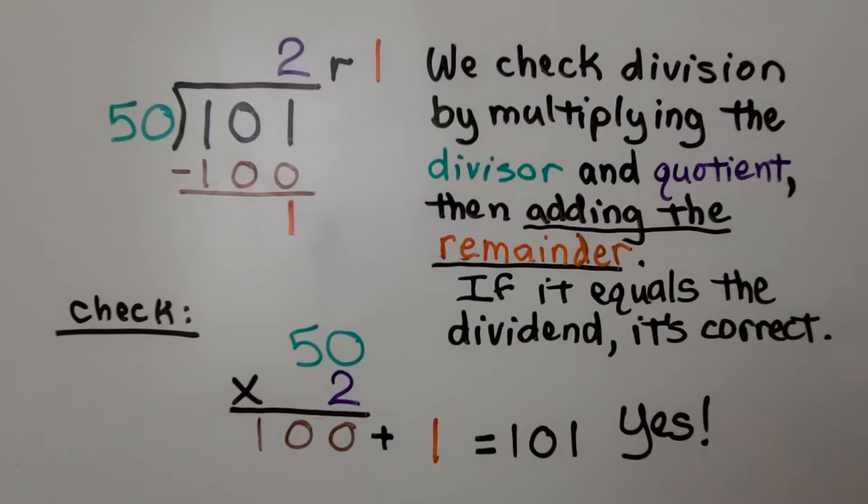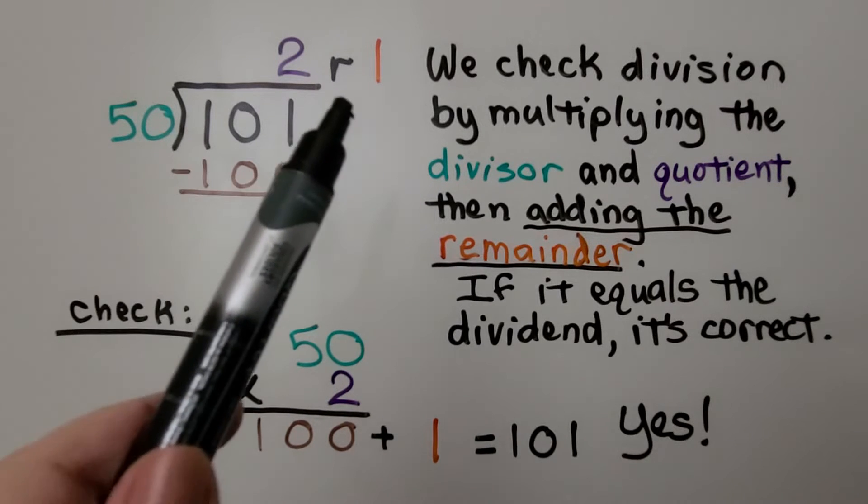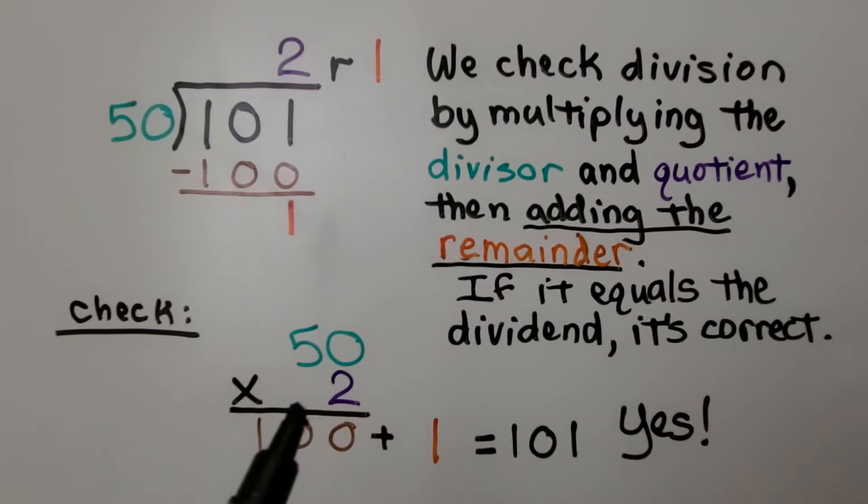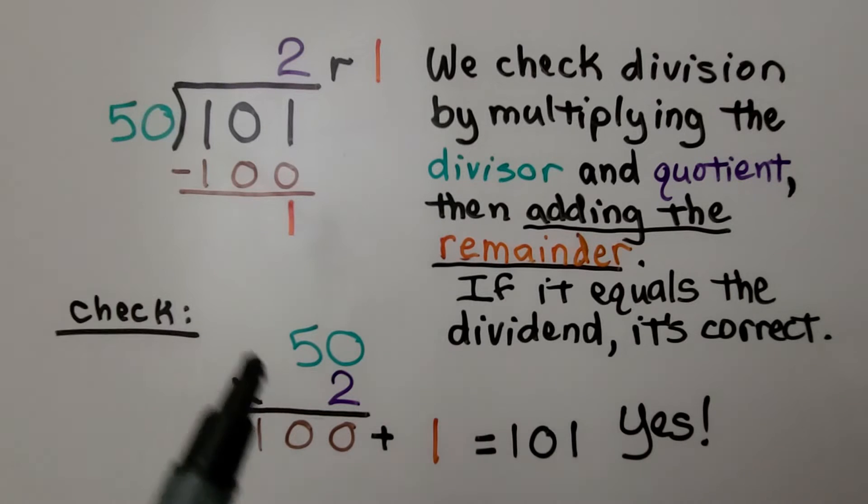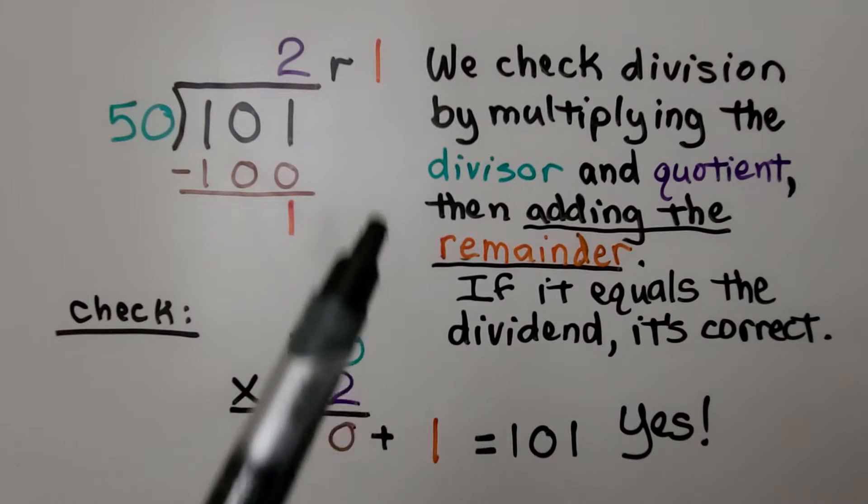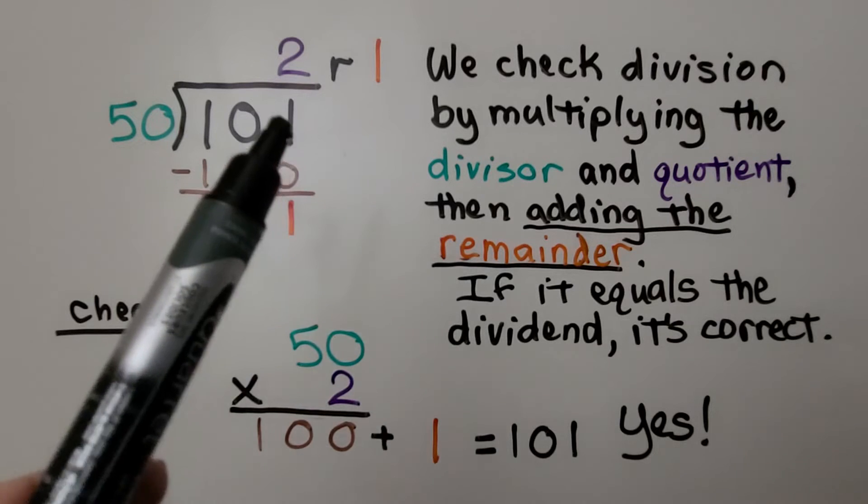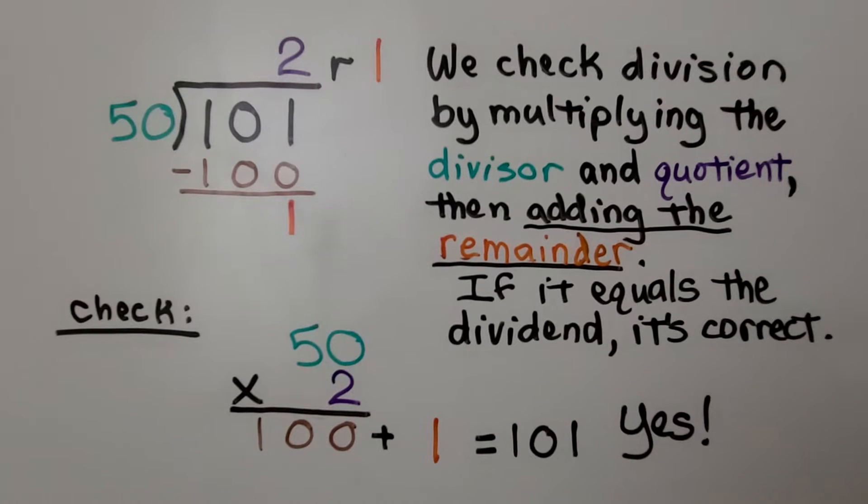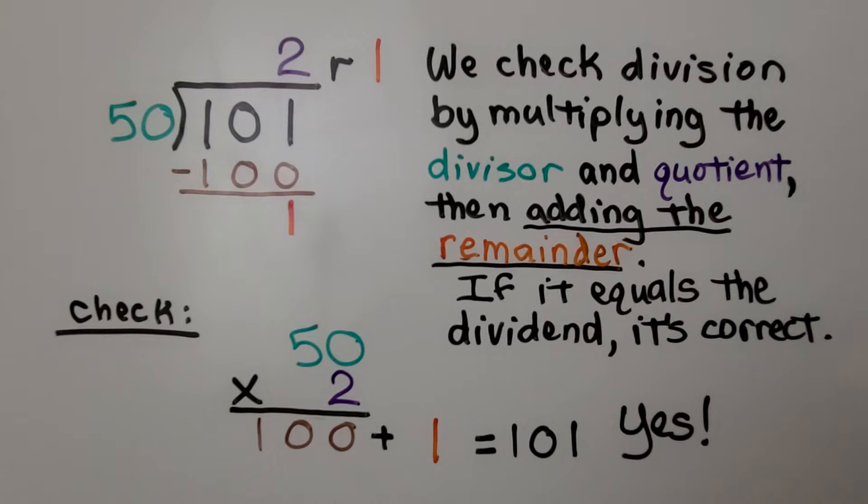We've learned that we can check division by multiplying the divisor and the quotient, and it should equal the dividend. But when we have a remainder, we multiply the divisor times the quotient, and we add the remainder. So we have 50 times 2 is 100, plus that one remainder is 101. It matches the dividend, so yes, we did it correctly. So if you're checking your long division, remember to add that remainder.